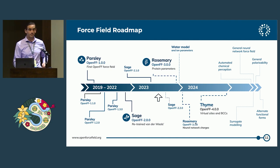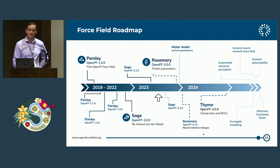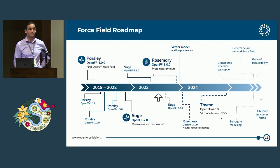Following that, we're hoping to release a point release of Rosemary — maybe Rosemary 3.1 — where we switch from a charge model that requires semi-empirical QM calculations to one that has charges assigned by a neural network. And then eventually we're going to release Thyme, which will be a force field that doesn't just have atom-centered point charges, but also includes virtual sites to capture electrostatic anisotropy around polarizable atoms.